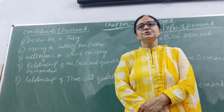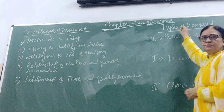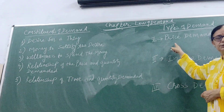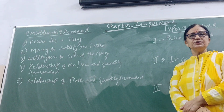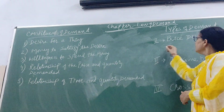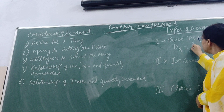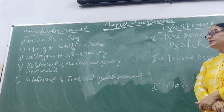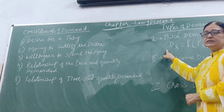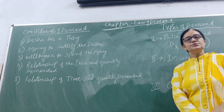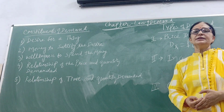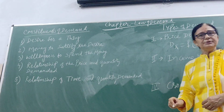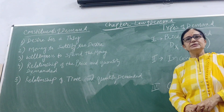Now let us come to the second part: the types of demand. There are three types. First is price demand — when we establish the relation between the price and quantity demanded. For example, the demand for product X is a function of the price of product X. Generally, this relationship is negative: at a high price we buy less, and at a low price we buy more.